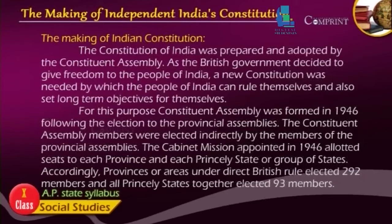The Constituent Assembly members were elected indirectly by the members of the provincial assemblies. The Cabinet Mission appointed in 1946 allotted seats to each province and each princely state or group of states. Accordingly, provinces or areas under direct British rule elected 292 members and all princely states together elected 93 members.